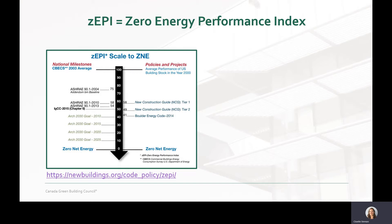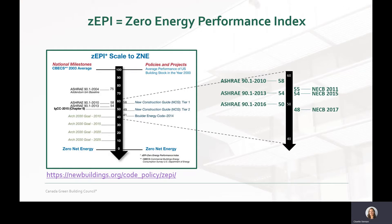ZEPI is the Zero Energy Performance Index. It is an absolute scale for measuring commercial building energy performance. The scale goes from 100 to 0, where 0 represents zero net energy. It uses an energy use intensity target for each building type and is adjusted for climate. The different versions of NECB and ASHRAE 90.1 can be plotted on the ZEPI scale and compared to each other.